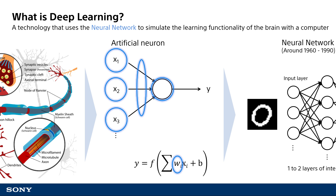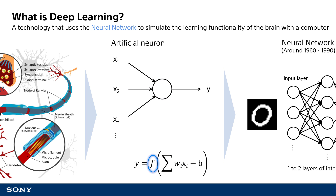Thus, the strength of the electrical signal in this nerve cell is determined by multiplying it by weight W1 for X1, weight W2 for X2, and weight W3 for X3 in order. Then the activation function F is used to realize the functionality of the nerve cell. If the value is above a certain value, the electrical signal is transmitted to the next neuron as it is. If it is below a certain value, no further electrical signal is transmitted. The result of going through this activation function is the output value of this neuron.